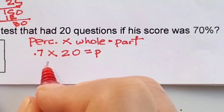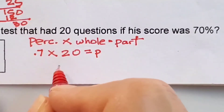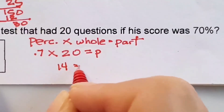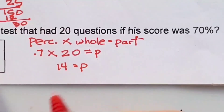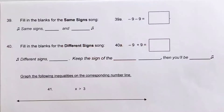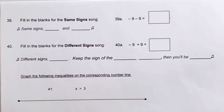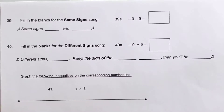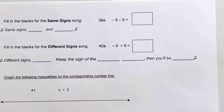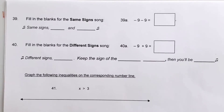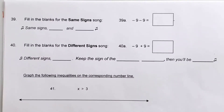So let's go ahead and multiply: 0.7 times 20 is 14. The total he got right is 14. For numbers 39 and 40, I put the songs that we sang earlier in the year.